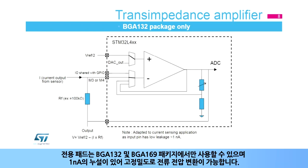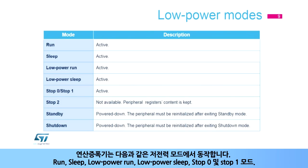The dedicated pads are only available on the BGA-132 and BGA-169 packages and have one nano-amp leakage, which allows for a current-to-voltage conversion with high precision. The operational amplifiers are active in the following low-power modes: run, sleep, low-power run, low-power sleep, stop zero, and stop one modes.